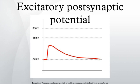In neuroscience, an excitatory postsynaptic potential is a postsynaptic potential that makes the neuron more likely to fire an action potential. This temporary depolarization of postsynaptic membrane potential, caused by the flow of positively charged ions into the postsynaptic cell, is a result of opening ligand-gated ion channels.